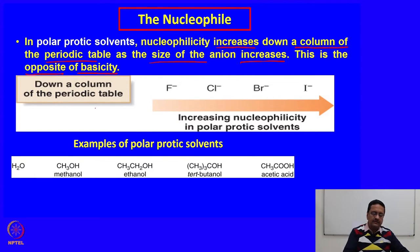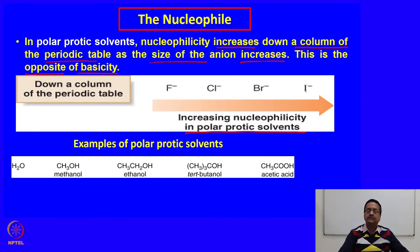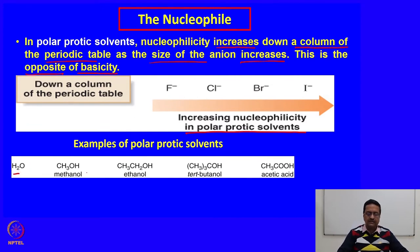Down the periodic table from fluoride to bromide to iodide, nucleophilicity increases in polar protic solvents because these larger groups are not as easily solvated by hydrogen bond formation in solution. Examples of good polar protic solvents are water, methanol, ethanol, tertiary butyl alcohol, and acetic acid.